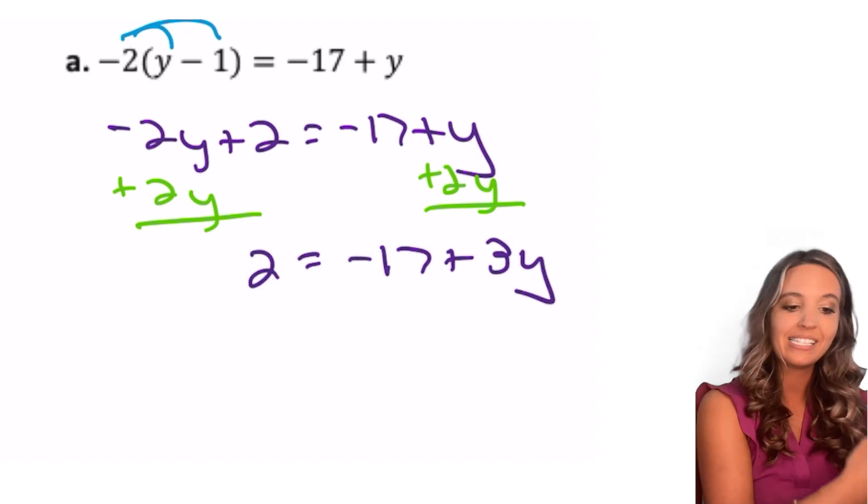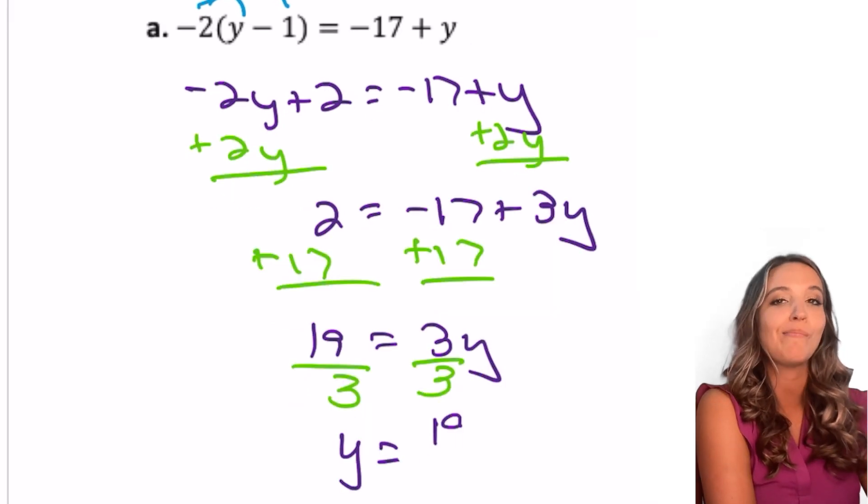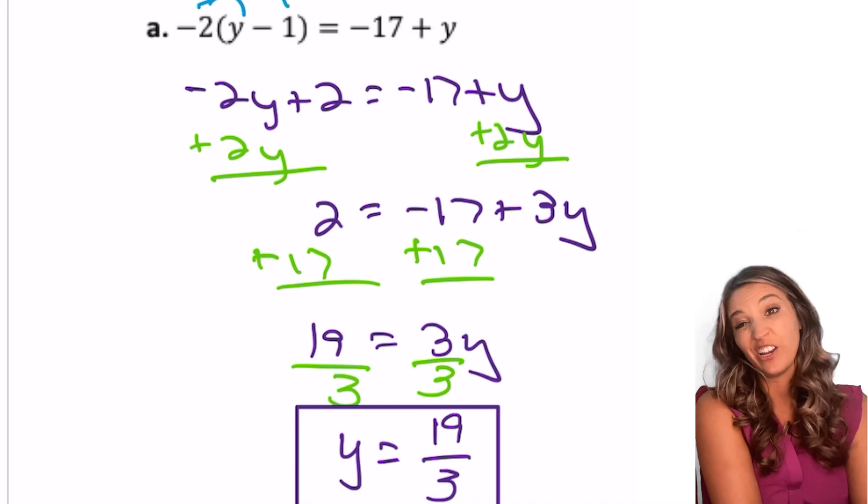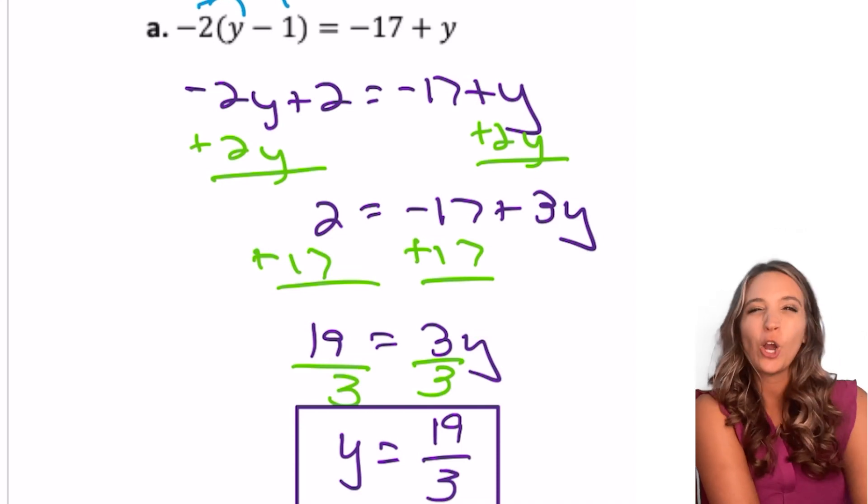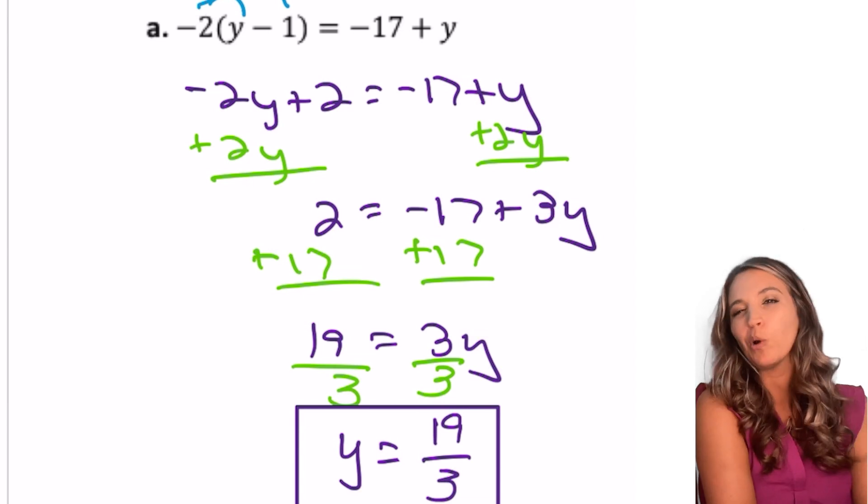Then move that 17, divide by three, and I'm going to get 19 divided by three equals y. y equals 19 thirds or six and a third. Improper fractions are easier for us to work with. So unless we have a reason to change it to mixed, we're going to keep them improper.